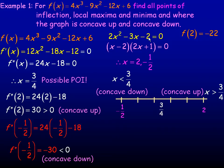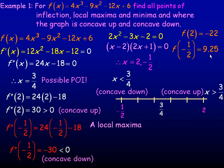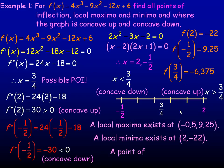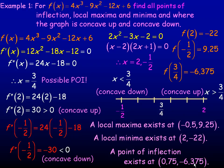We're asked to find all the points, so we need the y-coordinates. Substituting x equals 2 into the original function gives negative 22. Substituting x equals negative 1 half gives 9.25. So there's a local maximum point at (negative 1 half, 9.25) and a local minimum point at (2, negative 22). For our point of inflection, putting 3 quarters into the original function gives negative 6.375. So the point of inflection is at (3/4, negative 6.375).